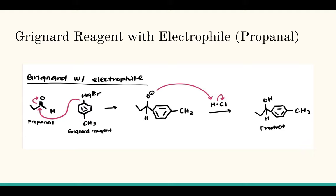So the Grignard Reagent is going to come in, attack that, bump the electrons up to the oxygen. And that's going to give us our tetrahedral intermediate.